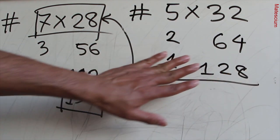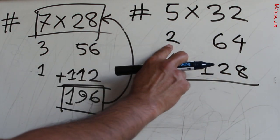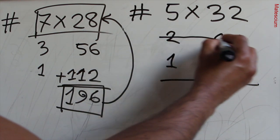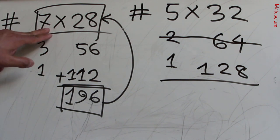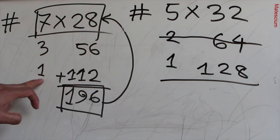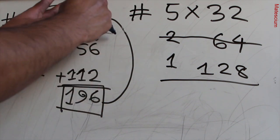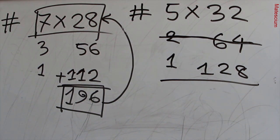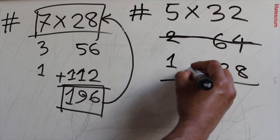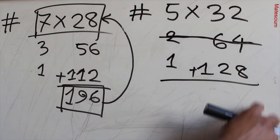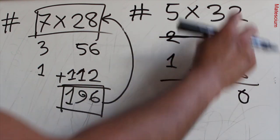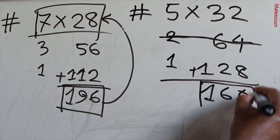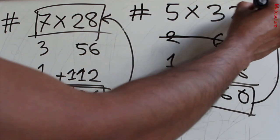But in this case something is different. Look here — this is an even number and this is an even number. Whenever both of them are even numbers they have to be removed from our calculation. So this part shall be removed from our consideration. Only add 128 plus 32. That means 8 plus 2 is 10, 3 plus 2 is 5 plus carry 1 is 6, and this is 1. That means 160 is the answer of 5 times 32.